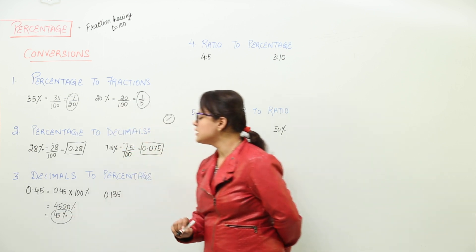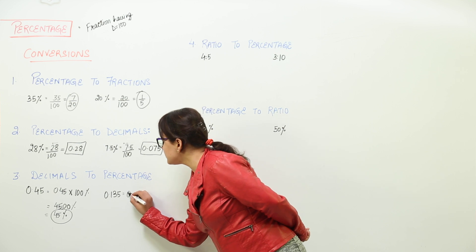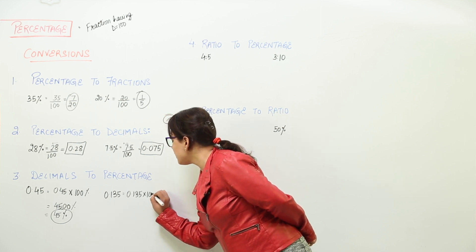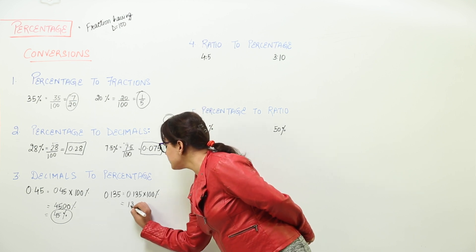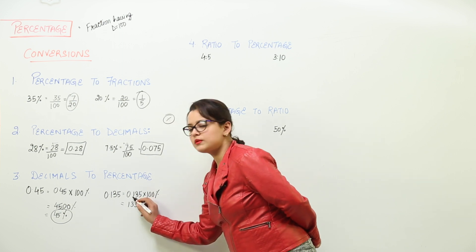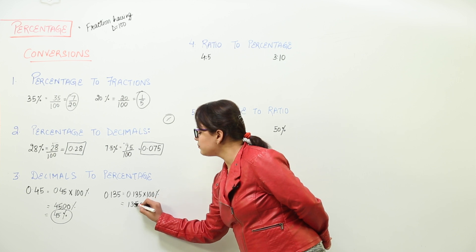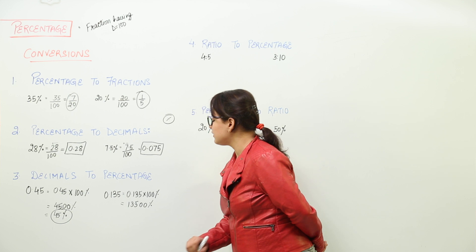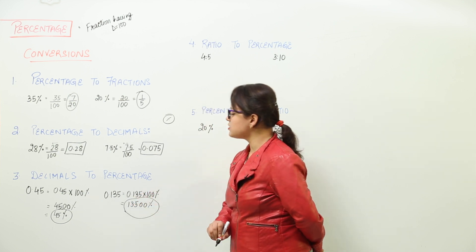Let's do the next one. Here also we are going to multiply the decimal 0.135 with 100 percent. By doing this we get 135 with two zeros, and three decimal places are to be put. We start counting 1, 2, 3 and put the decimal place, making a percentage sign. So 0.135 equals 13.5 percent.